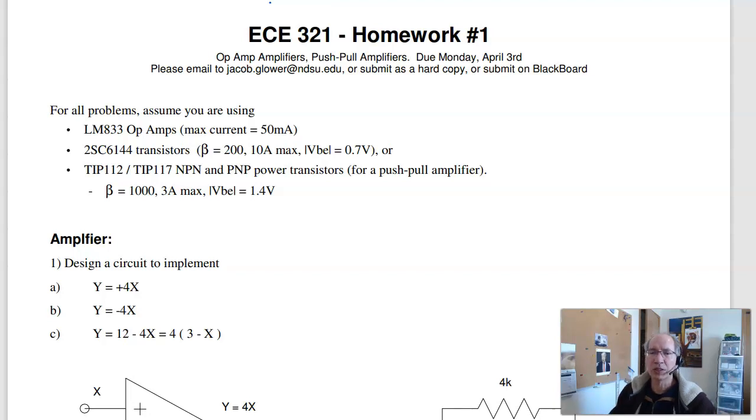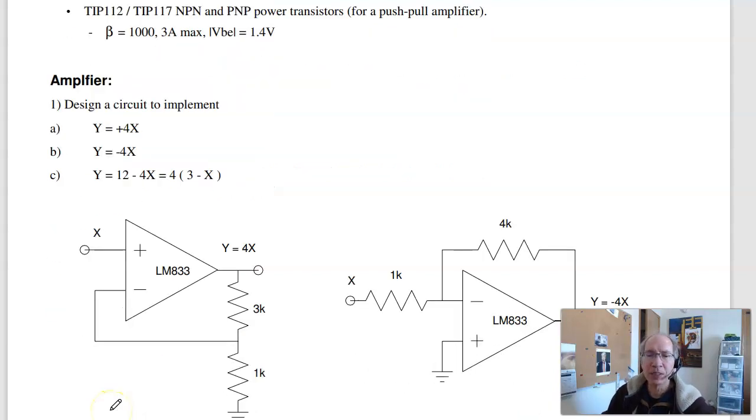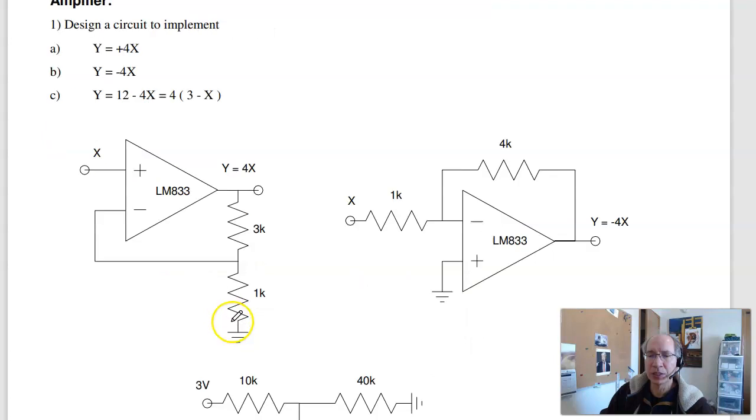Here are solutions to homework set number 1 for ECE321 analog electronics. Now the first problem is build an amplifier. There's a couple ways to do that. To build a gain of plus 4, I would use a non-inverting amplifier.